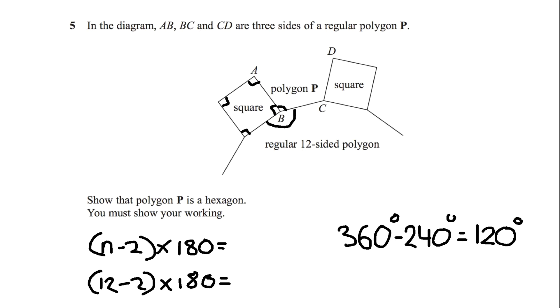So the angle of polygon P is 120 degrees. Now it says show that the polygon P is a hexagon. Hexagons have six sides.